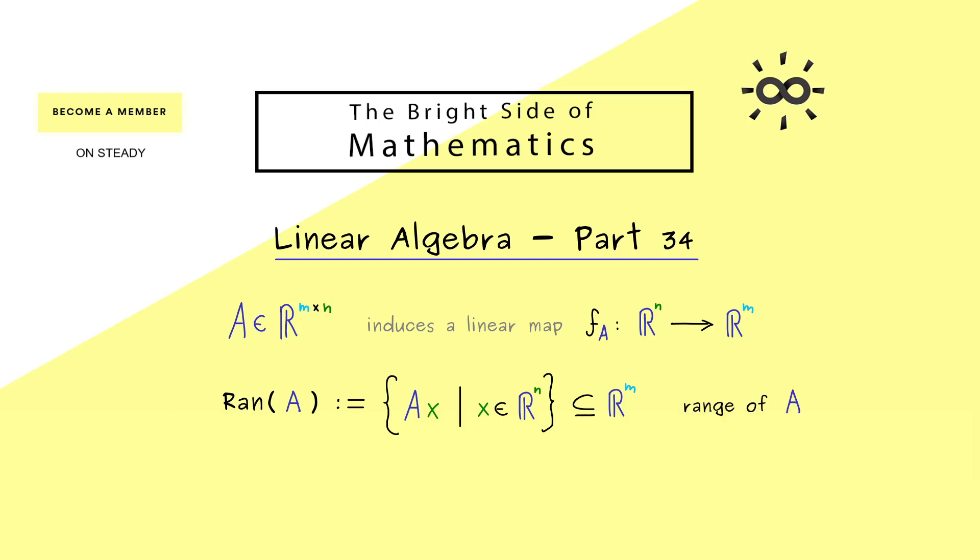This is the important notion you should remember, called range of A. However, some people say and write image of A. You should see this is not special at all. This is a notion we have in general for a map between two sets. If you know my Start Learning Mathematics series, this is nothing else than the range of the map f_A. Essentially what is happening here is that the definition of the range is extended to a matrix A.